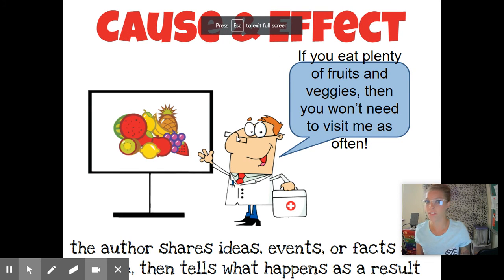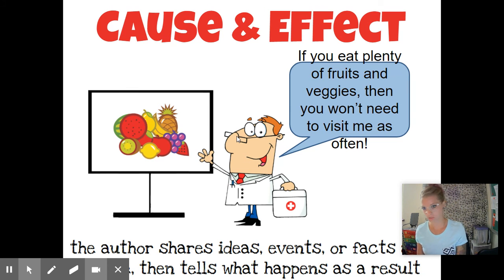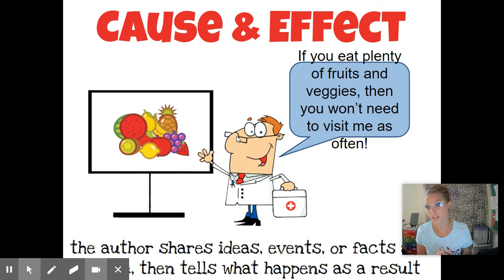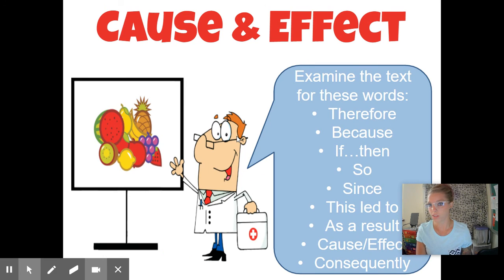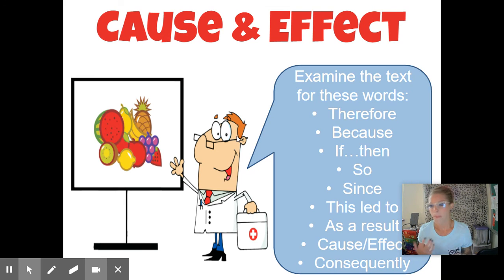The second type of text structure is cause and effect. Think about it like this: if I run down the hallway, I may trip and fall and scrape my knee. The cause of my knee being scraped was me running down the hallway. For example, if you eat plenty of fruits and vegetables, you won't need to visit the doctor very often — that's the old tale that parents tell their children. The author is going to give you events and talk about something that happened as a result of that event. Look for words like 'therefore,' 'because,' 'if this happened then this happened,' 'as a result,' and 'consequently.'